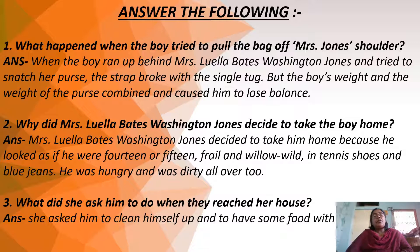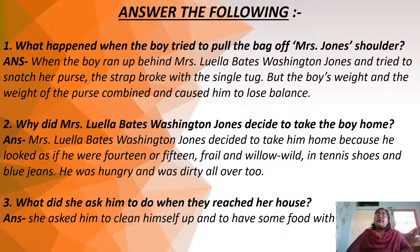Number two: Why did Mrs. Luella Bates Washington Jones decide to take the boy home rather than the police station? Because he looked about 14 or 15 years old — a very small boy. He was frail and willow wild, meaning weak and very thin. He did not look well-kept; he was standing in tennis shoes and blue jeans, not well dressed. He was hungry, hadn't eaten since morning, and was dirty. That is why Mrs. Jones felt sympathy for the boy and took him home.